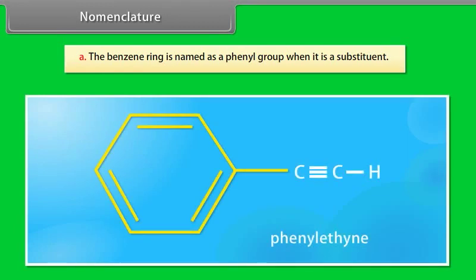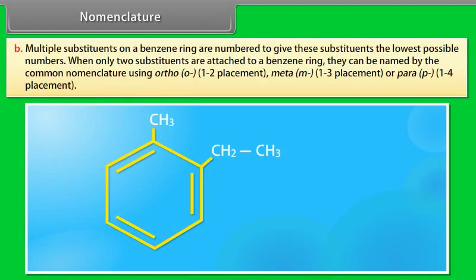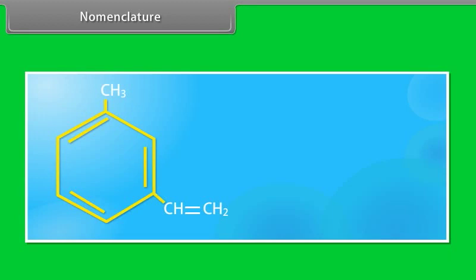A. The benzene ring is named as a phenyl group when it is a substituent. B. Multiple substituents on a benzene ring are numbered to give these substituents the lowest possible numbers. When only two substituents are attached to a benzene ring, they can be named by the common nomenclature using ortho, O, 1 to 2 placement, meta, M, 1 to 3 placement, or para, P, 1 to 4 placement. Given compound is 1-ethyl, 2-methylbenzene, O-methyloethylobenzene.